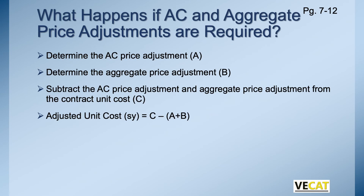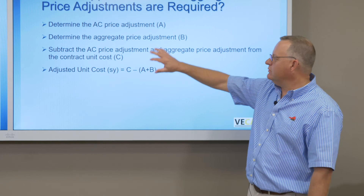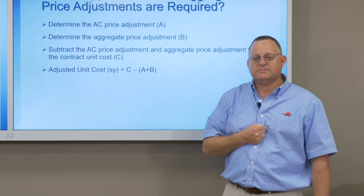What happens if both aggregate and AC price adjustments are required? You go through the same process and adjust the overall unit cost: calculate the adjustment for asphalt, calculate the adjustment for aggregate, add those together and subtract from the contract cost — that gives you your adjusted unit cost. The math will be covered in another module.